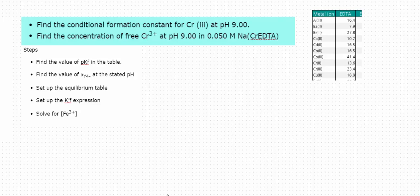We are first asked to find the conditional formation constant before we find the concentration of the free chromium three. So to find the conditional formation constant, K prime F, we need the alpha value at the pH that we're looking at, as well as the KF value for the metal of interest.